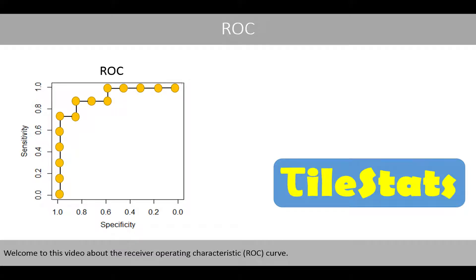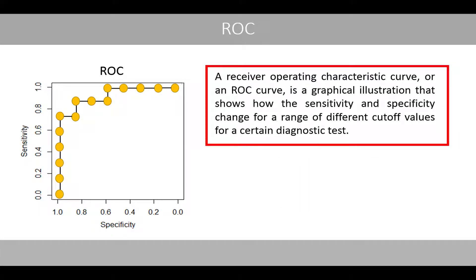Welcome to this video about the receiver operating characteristic curve. A receiver operating characteristic curve, or an ROC curve, is a graphic illustration that shows how the sensitivity and specificity change for a range of different cutoff values for a certain diagnostic test.